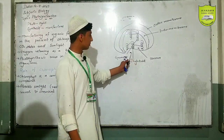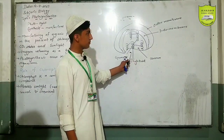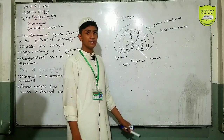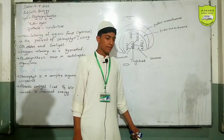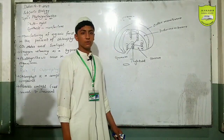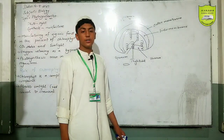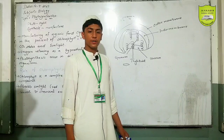This is a process of photosynthesis. This is a leaf, and it is green because it reflects the green portion of light.